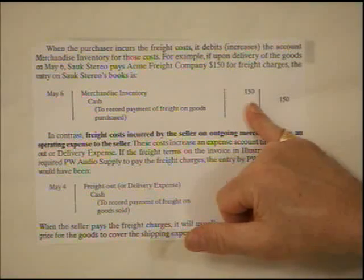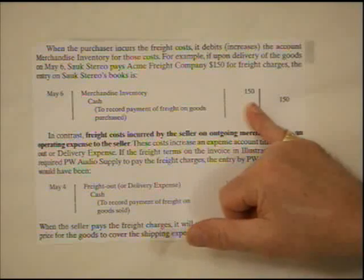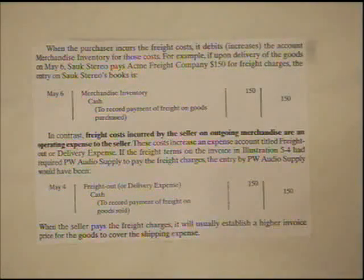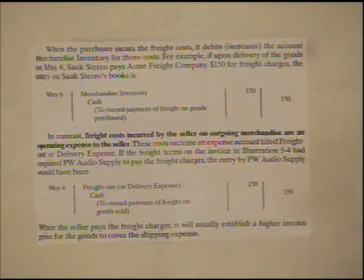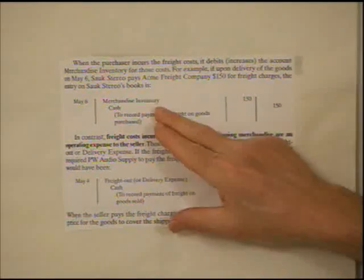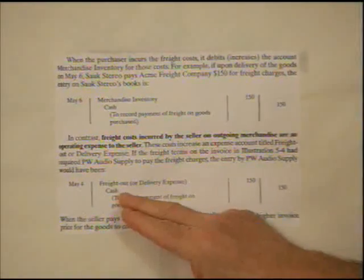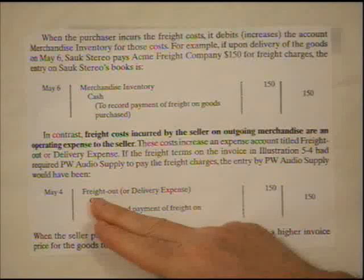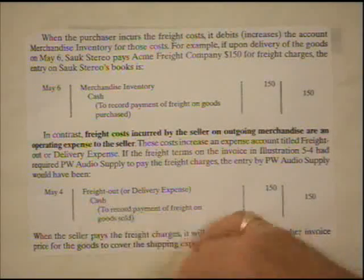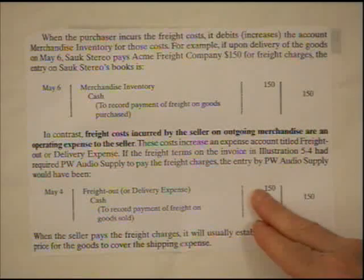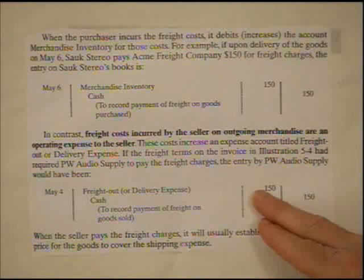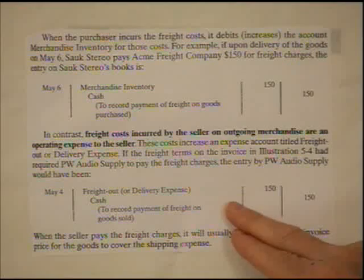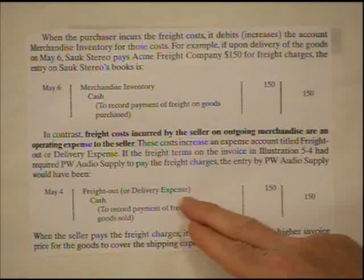Contrasting that is freight out, or transportation out — the cost of getting goods we sell to our customers. That is not a cost of merchandise inventory but an actual operating expense. We can call it freight out, transportation out, or delivery expense. If we incurred $150 of that type of expense, we would credit cash and the debit would go to an expense account, not merchandise inventory. So we have two types of freight costs: freight in becomes a merchandise cost, and freight out is a delivery expense.